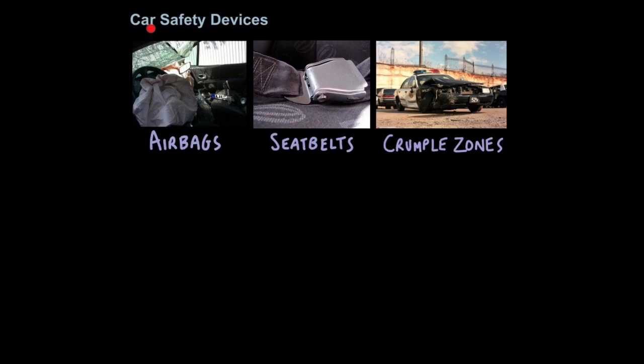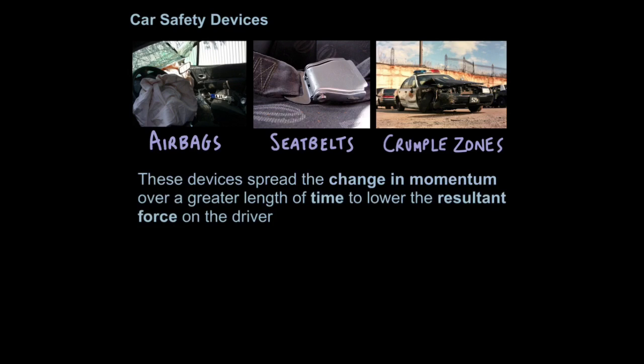Finally let's look at how car safety devices work. There are three car safety devices you need to know about. One airbags, two seatbelts, three crumple zones which I referred to when I started off this tutorial. Crumple zones basically allow a car to compress on impact. Now if you had to explain how these devices work this is what you would say. These devices spread the change in momentum over a greater length of time to lower the resultant force on the driver. Let's explain that in more detail.